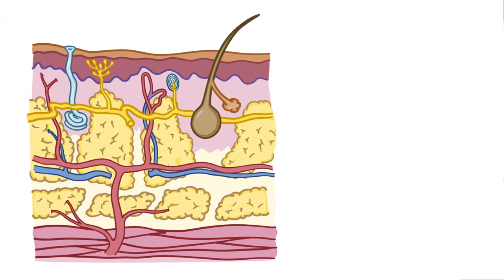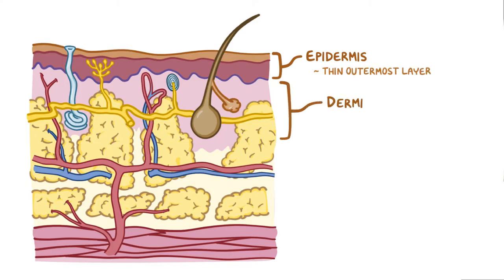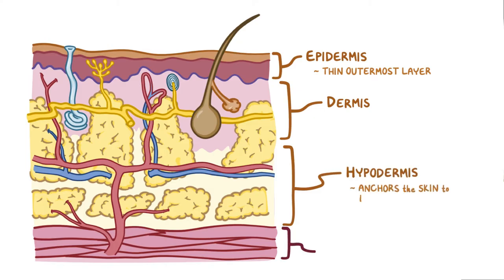The skin is divided into three layers. The epidermis forms the thin outermost layer of the skin, underneath is the thicker dermis layer, and finally there's the hypodermis that anchors the skin to the underlying muscle.